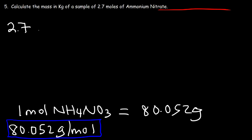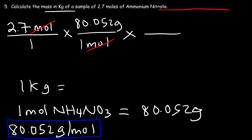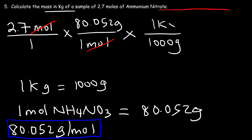Start with what we're given: 2.7 moles of ammonium nitrate. Convert moles to grams using our conversion factor — 1 mole of NH₄NO₃ has a mass of 80.052 grams. The unit moles cancels. Now, we want the mass in kilograms, not grams. Since 1 kilogram equals 1,000 grams, we put 1,000 grams on the bottom and 1 kilogram on top. So it's 2.7 times 80.052 divided by 1,000, giving an answer of 0.216 kilograms of ammonium nitrate.